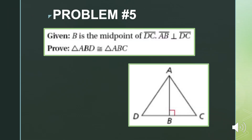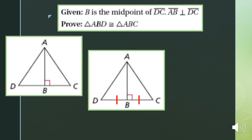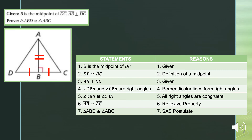Problem number five. B is the midpoint of line segment DC, so line segment DB is congruent to line segment BC. Another given is that line segment AB is perpendicular to line segment DC. This implies both angles on either side are right angles. We need to prove that triangle ABD is congruent to triangle ABC. We need three corresponding parts, and we can use line segment AB congruent to itself.